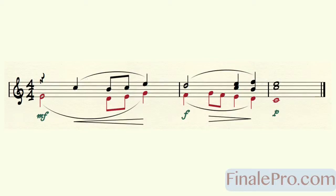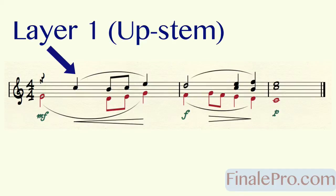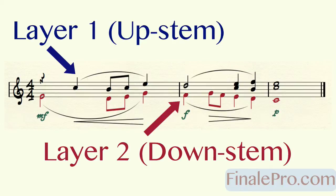The music you see here was put into two separate layers. The higher notes are placed into layer 1 with their stems going up and the lower notes into layer 2 with their stems going down. That's how Finale treats layers by default.